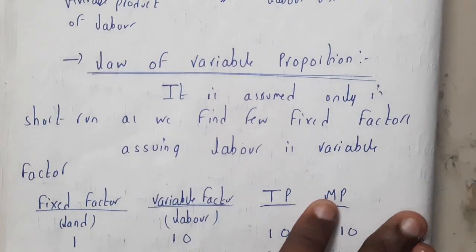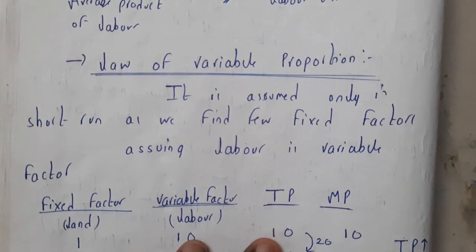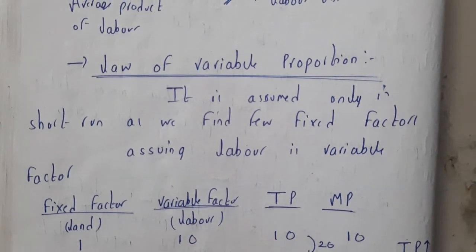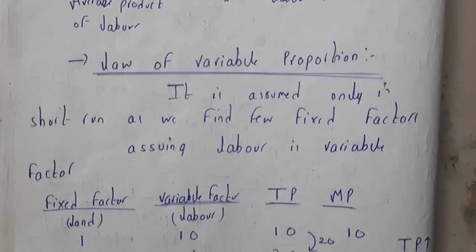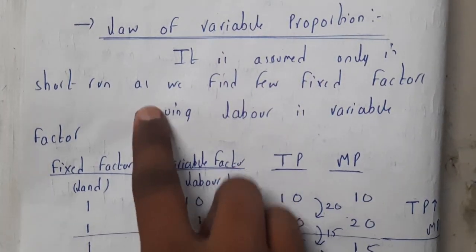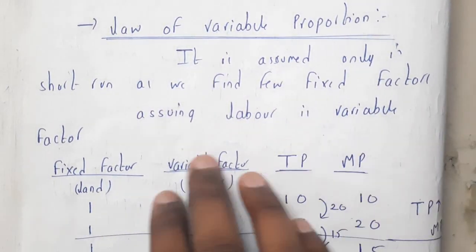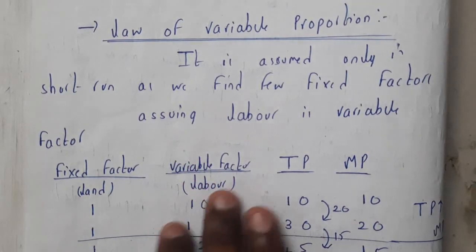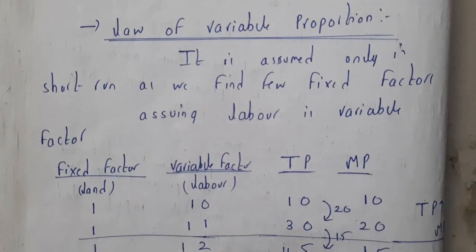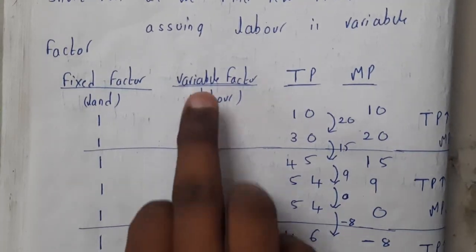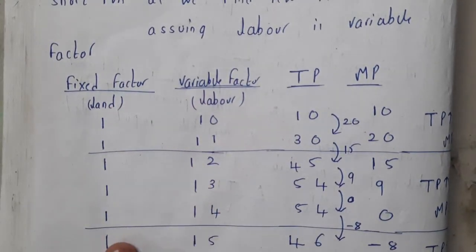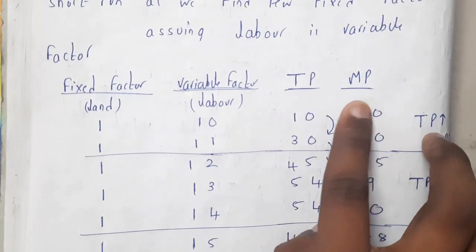Now let us go through the law of variable proportions. This law depends completely on total product and marginal product. It is assumed only in the short run, as we find only few fixed factors. This law of variable proportions comes into play here. We assume the variable factor is labor and the fixed factor is land.